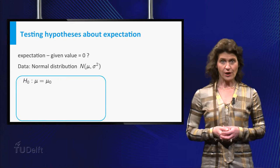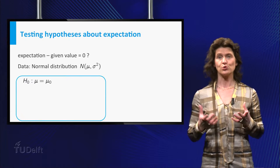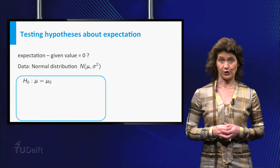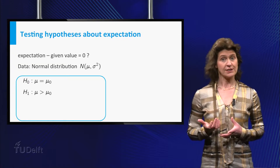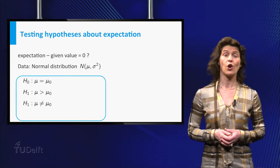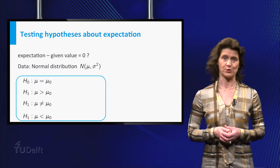You test the null hypothesis mu is equal to some given mu0 against one of the following alternative hypotheses: mu is greater than mu0, mu is not equal to mu0, or mu is smaller than mu0.